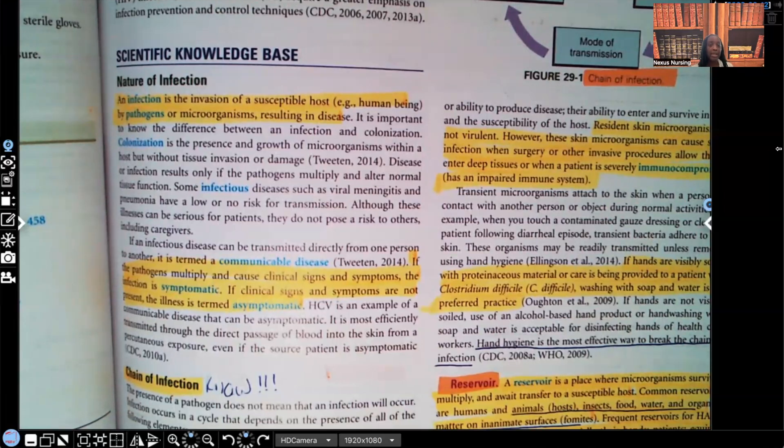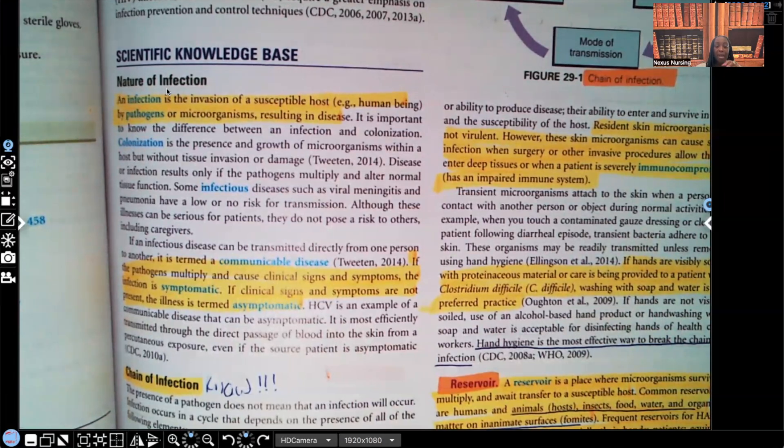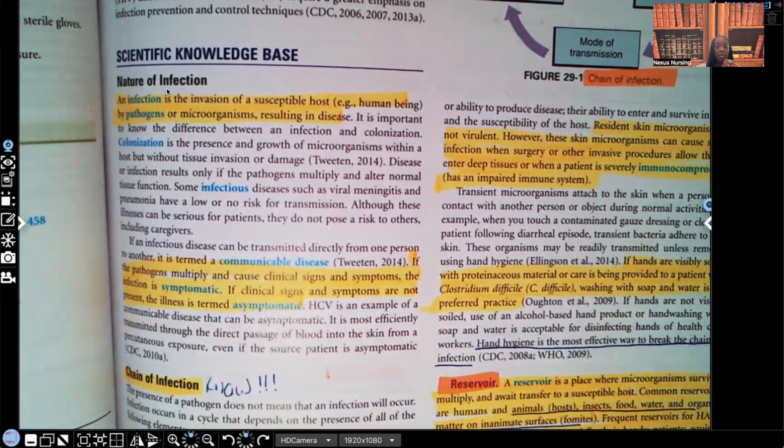Let's take a look. We're going to start where it says scientific knowledge base, nature of infection. So it says that infection is invasion of a susceptible host, human being, by pathogens or microorganisms. So it could be bacteria, it could be a virus, it could be a fungus, right? Any pathogen that ends up causing disease.